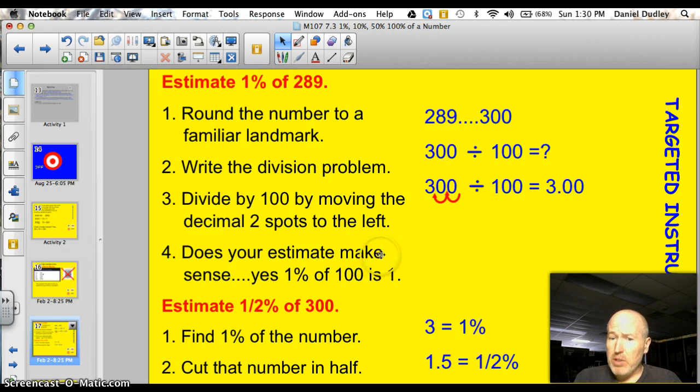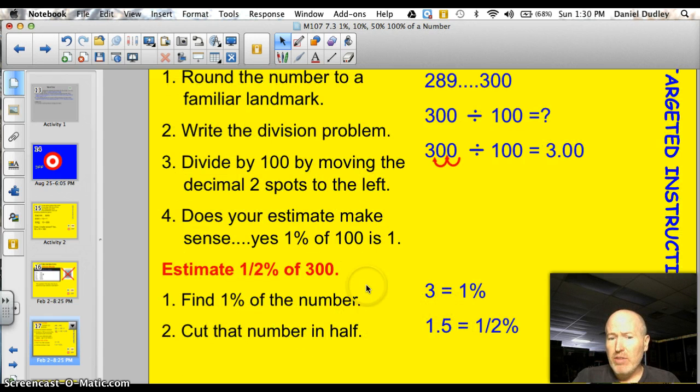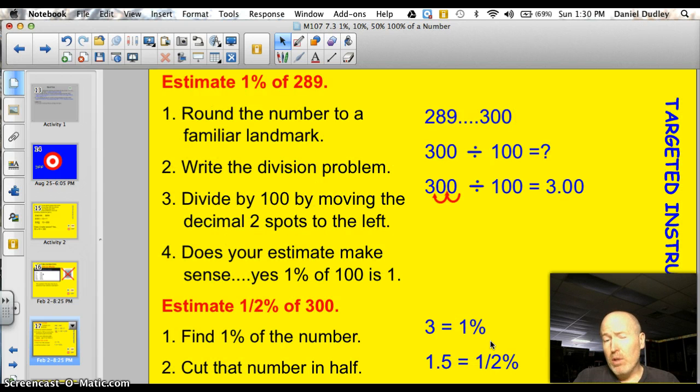So, now I have to ask yourself, does this estimate make sense that 3 would be equal to 1%? Well, yeah, because 1% of 100 is going to be 1, just like 1 cent is 1% of a dollar, and 1 dollar is 1% of a hundred dollars. So, to find a half percent, we just cut that number in half. So, we know that if 1% of a number is 3, a half percent is going to be 1 and a half.